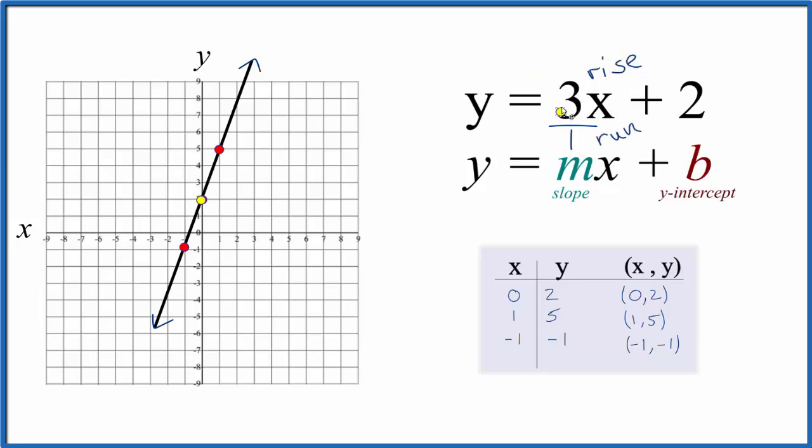So I go up 3 from that y-intercept and over 1. 1, 2, 3, over 1. And then I could go up 3, rise, 1, 2, 3, over 1.